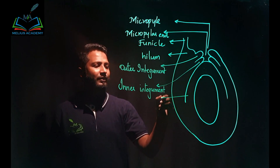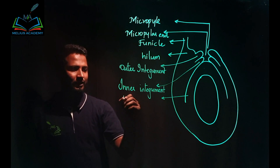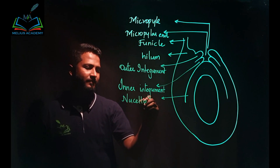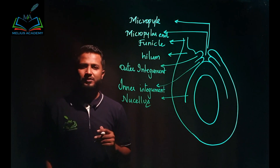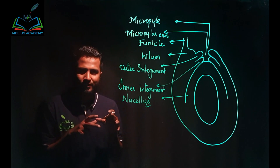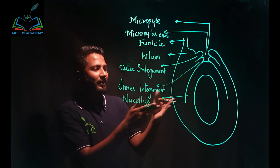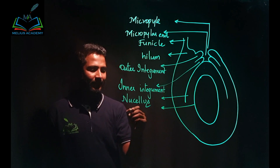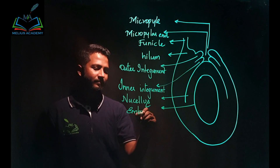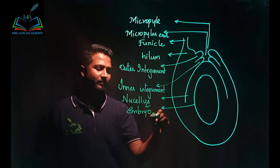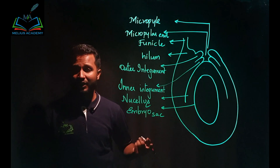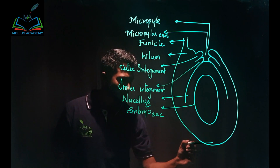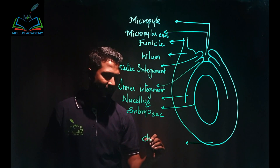Then we have a nutritive tissue known as nucellus. Nucellus is nutritive tissue which will supply nutrition to the developing embryo sac. This region is the embryo sac, which can also be written as female gametophyte. The base of the ovule is known as the chalazal end.